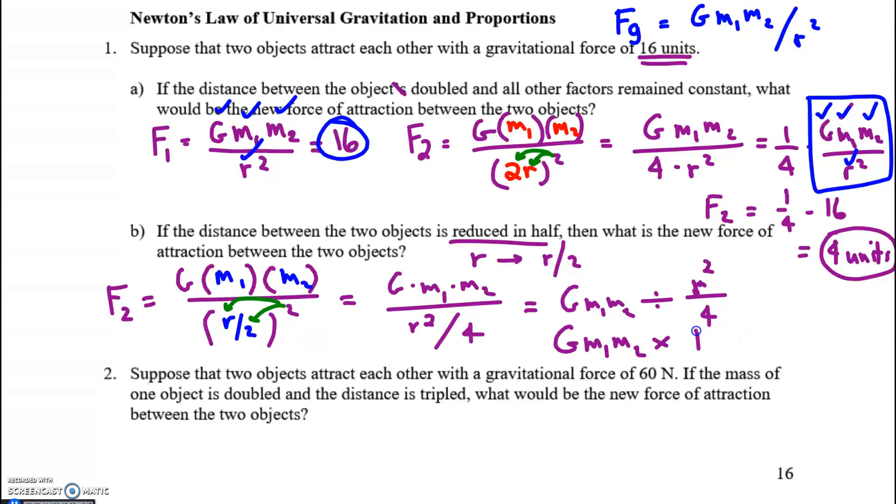So multiply by 4 over R squared and we get 4 times G M1 M2 over R squared. But again G times M1 times M2 over R squared that is simply equal to 16 so I can substitute in and say 4 times 16 gives me a final answer of 64 units.